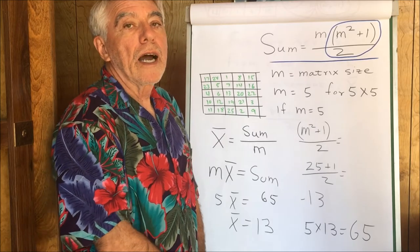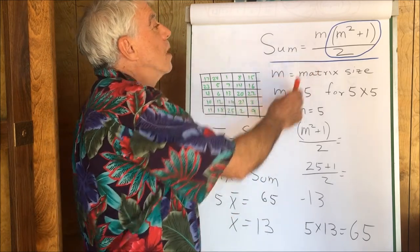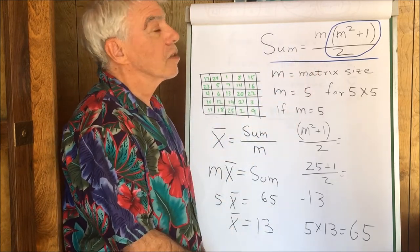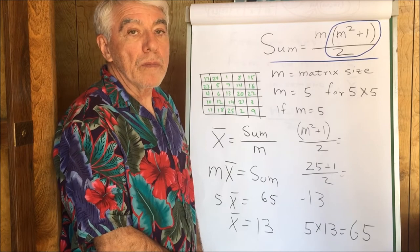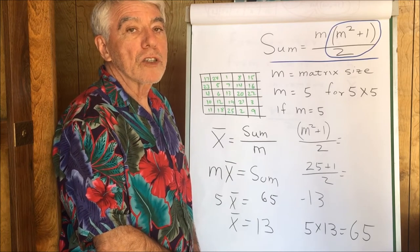Hello, my name is Ed Hughes. I'm here to discuss this formula that gives the sum of the rows, columns, and diagonals of a magic square.